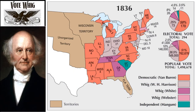The election of 1836 saw the emergence of the Whig Party as the primary opposition to the Democratic Party. The Whigs ran multiple candidates to try and prevent the Democrats from winning the majority of the electoral vote. Vice President Martin Van Buren took a majority of the popular and electoral vote. The election signaled the continuation of Jacksonian democracy for the next four years. The Whigs won moderate gains in the House, but the Democrats still firmly controlled the House and the Senate.